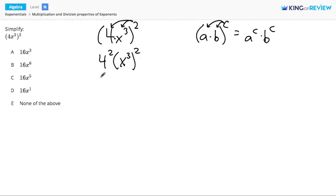4 squared is 4 times 4, which is 16, but now we need to figure out what to do when we have a variable raised to a power and then raised to another power.